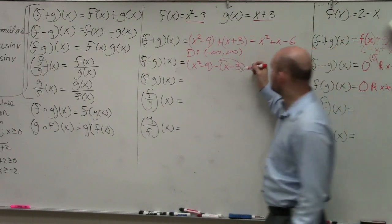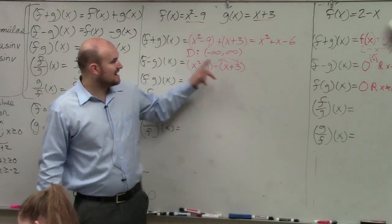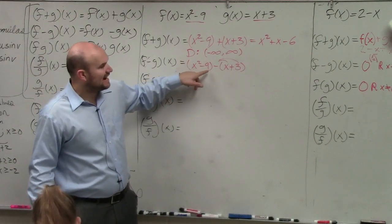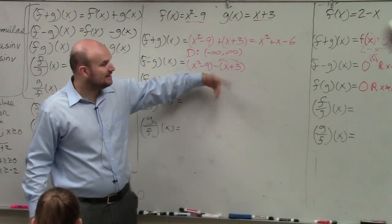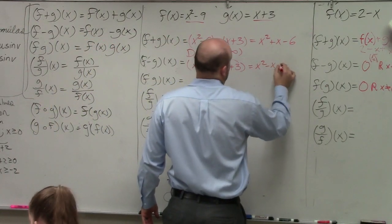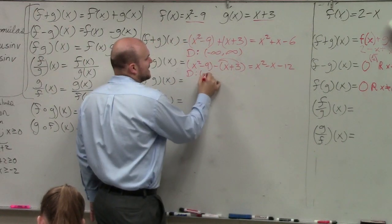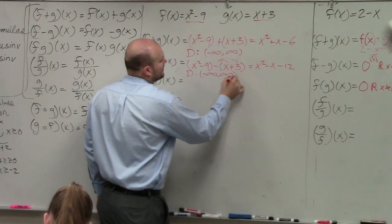Oh, no. Sorry. That's a plus 3. x plus 3. So it's a negative x and it's a negative 3. So negative 9 plus a negative 3 is going to be a negative 12. x squared minus x minus 12. Again, the domain is going to be the same. Negative infinity to infinity.